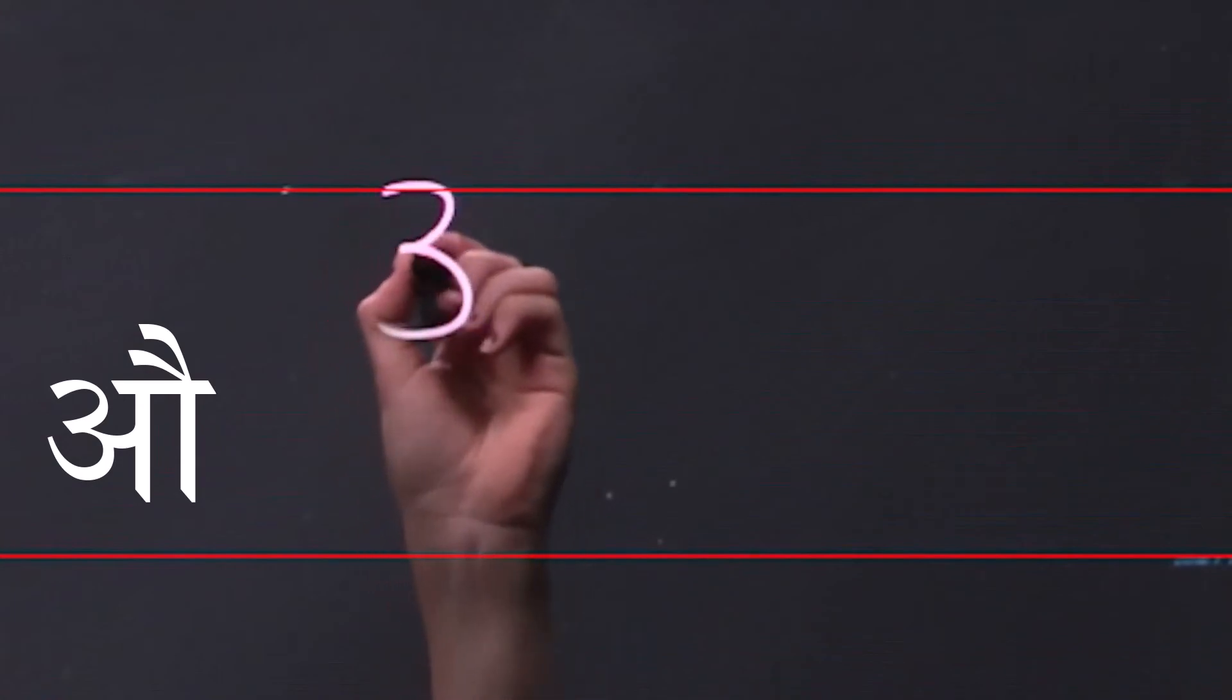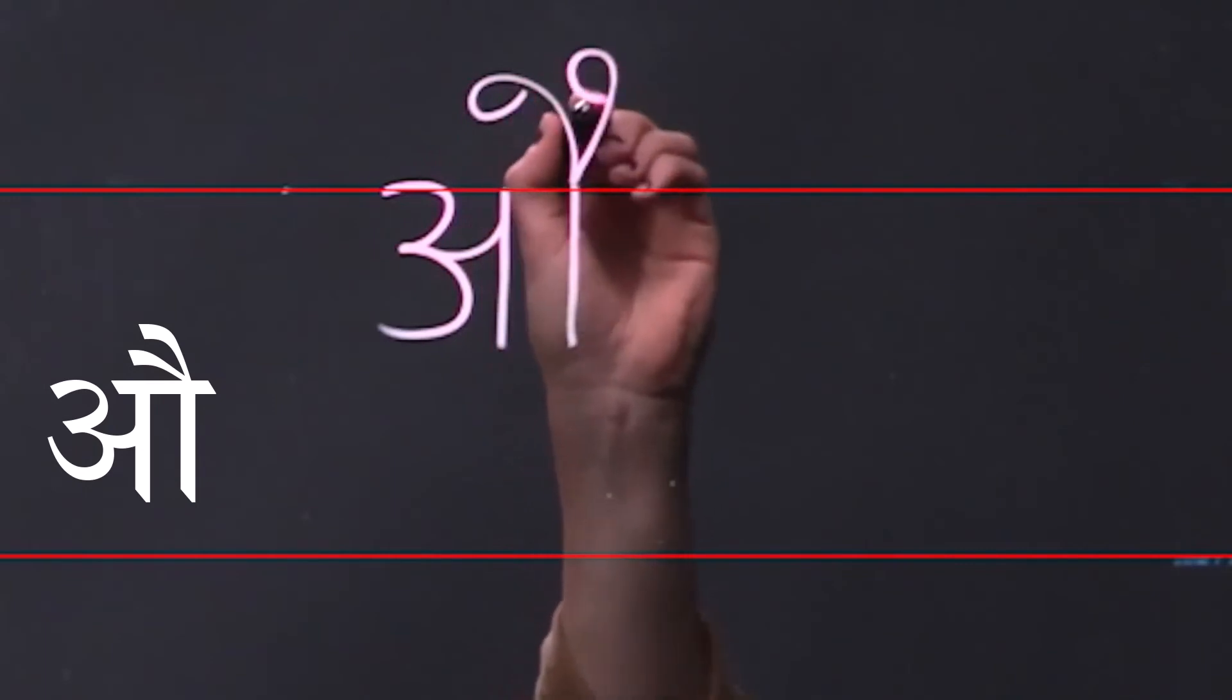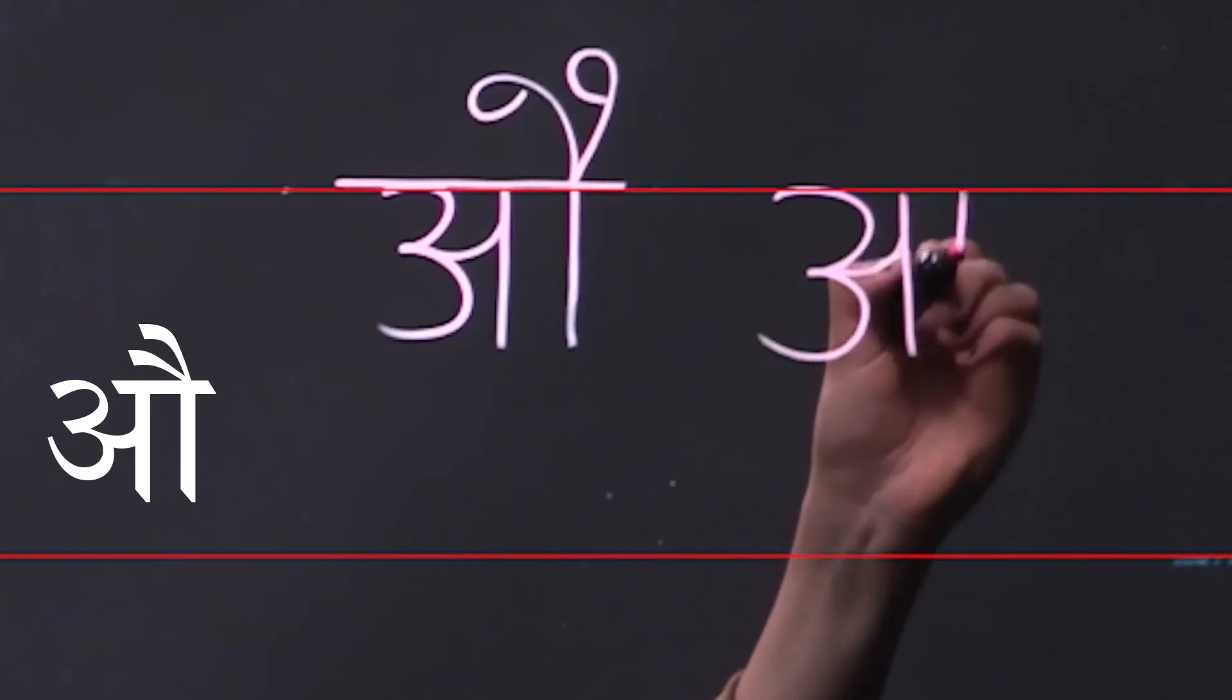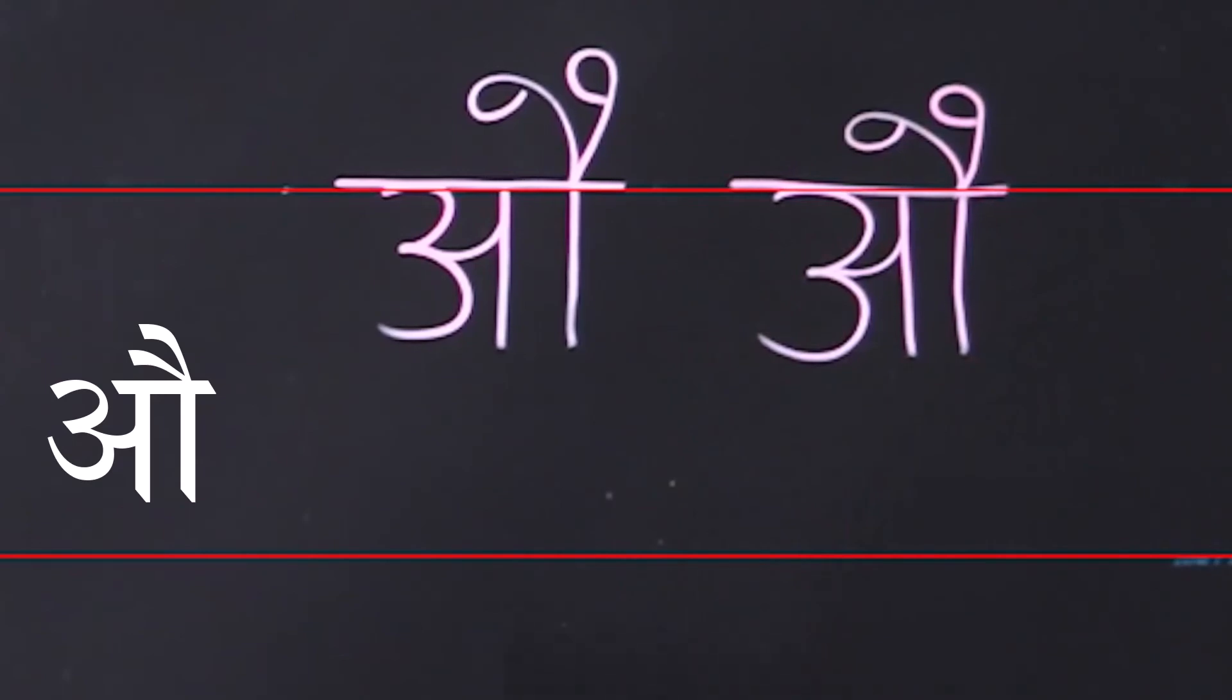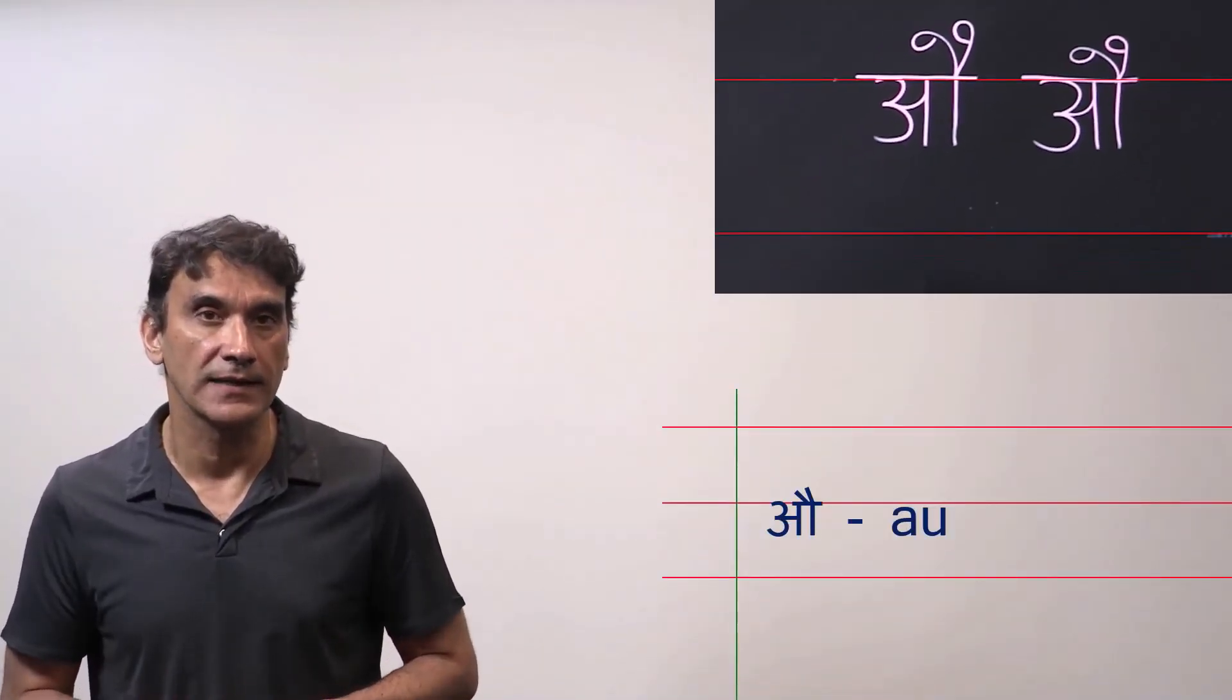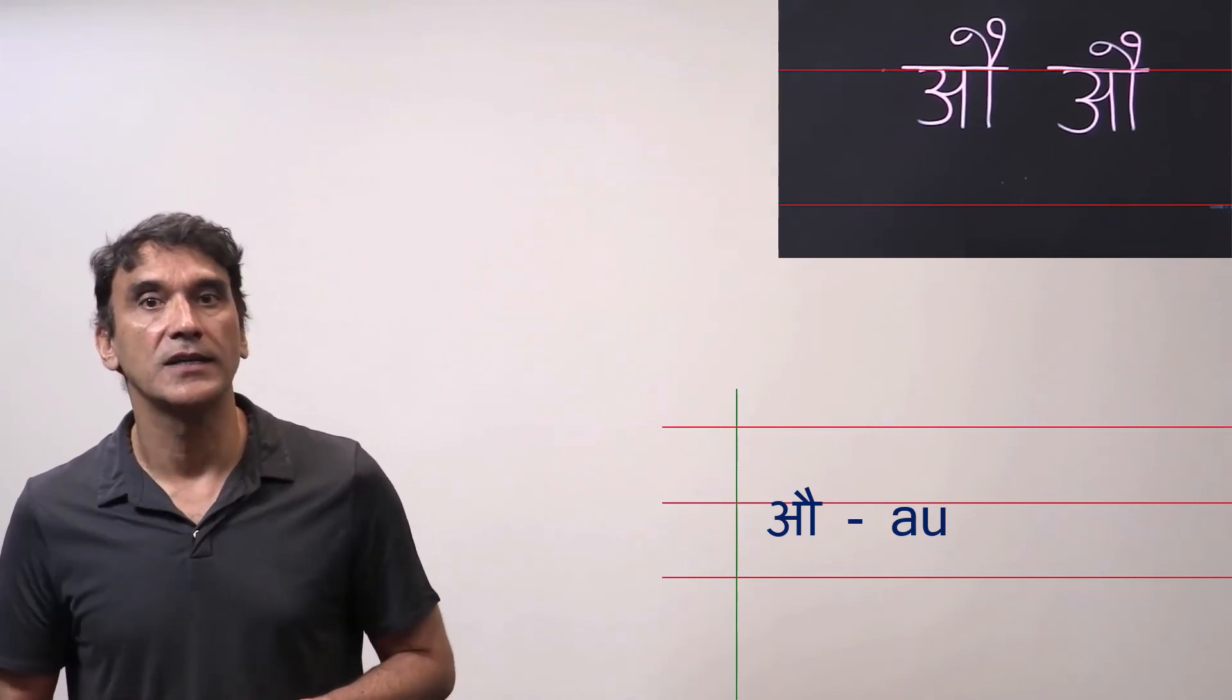Au is very similar to o, the last vowel we took, but with another slanted line. You just add another slanted line to make it au. Make sure both slanted lines come from the same spot, the top right corner of the letter. The difference between o and au is the number of slanted lines on top. O has one slanted line and au has two.